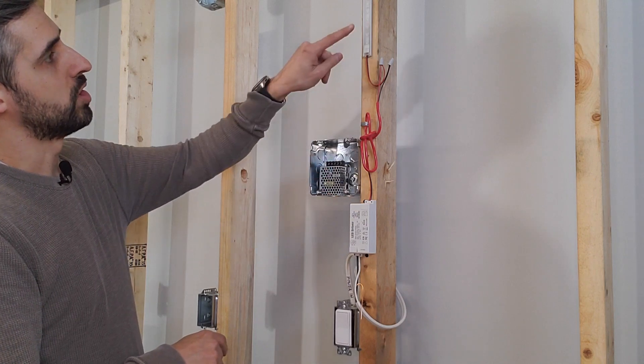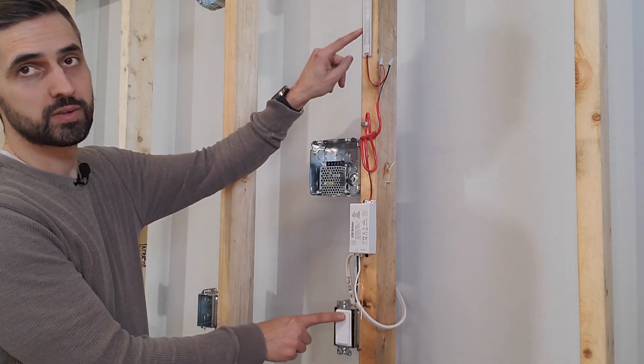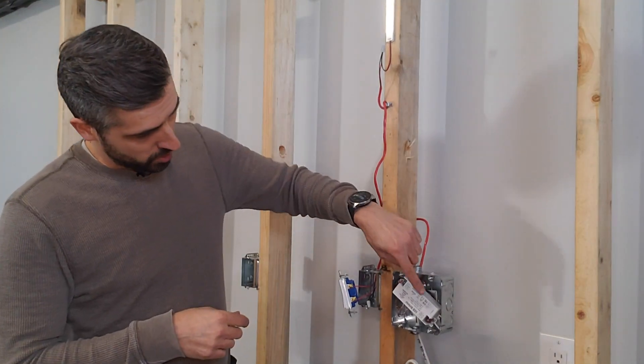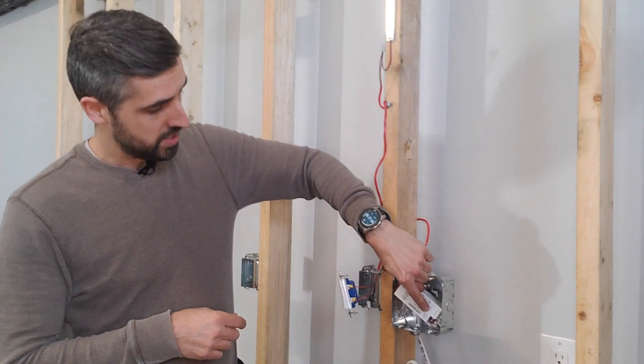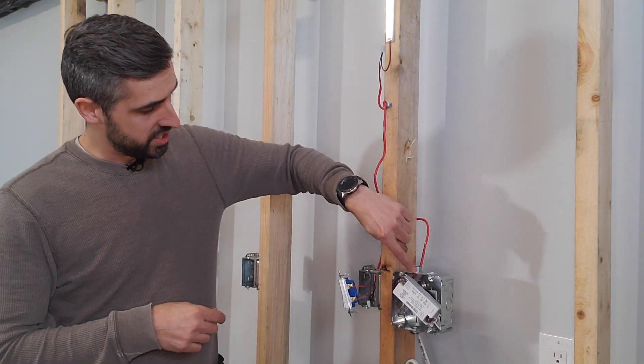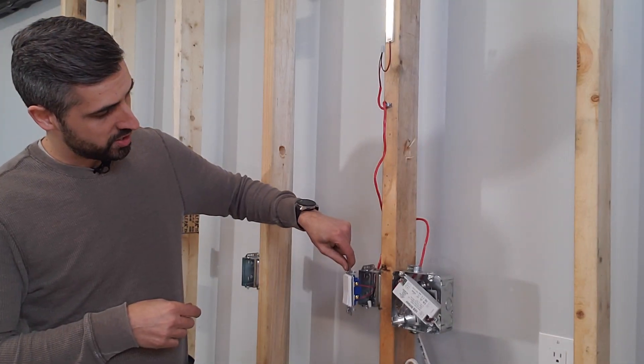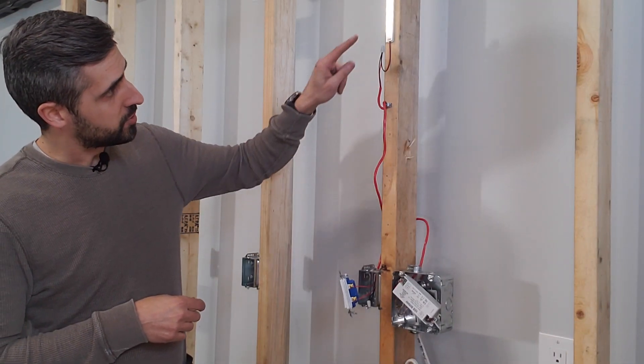Now from here, the 12 volts DC will go and power up your tape strip. Option number two: the 120 volt power will come into the driver first, then 12 volts DC will go to the switch, and from the switch up to the tape strip.